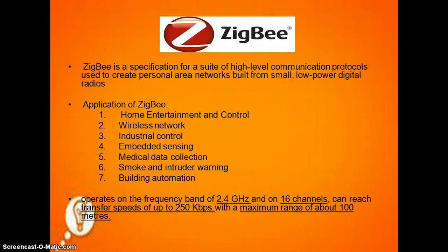Applications of Zigbee can be used in home entertainment and control, wireless networks, industrial control, embedded sensing, medical data collection, smoke and intruder warning, and building automation. It can be operated on the frequency band of 2.4 GHz.